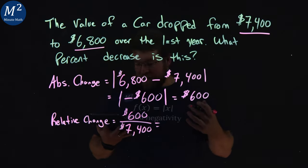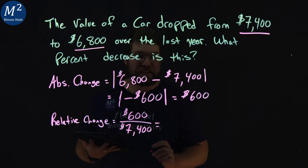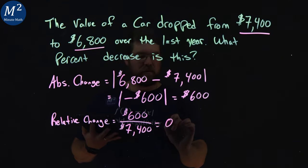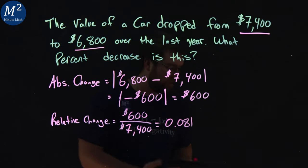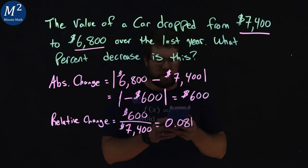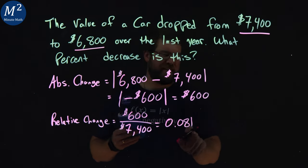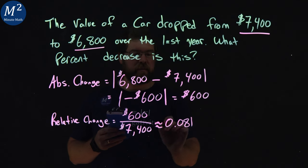Dollar signs cancel out, and we end up with a decimal value. So $600 divided by $7,400 is 0.081. Let me just check that in my calculator, make sure it's correct, $600 divided by $7,400. Yep, and there is a decimal afterwards, but we only need this many places, so we'll put approximately right there.